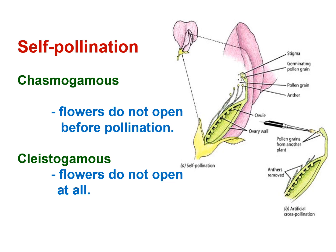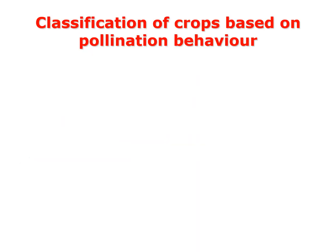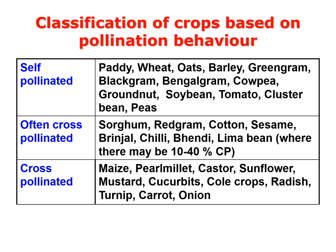Mechanisms promoting cross-pollination include unisexual flowers (monoecious or dioecious), self-sterility or self-incompatibility, dichogamy, herkogamy, and heterostyly. Classification of crops based on pollination behavior: self-pollinated crops include paddy, wheat, oats, barley, green gram, black gram, Bengal gram, cowpea, groundnut, soybean, tomato, cluster bean, and peas. Often cross-pollinated crops include sorghum, red gram, cotton, sesame, brinjal, chilli, okra, and lima bean, with 10–40% cross-pollination. Predominantly cross-pollinated crops include maize, pearl millet, castor, sunflower, mustard, sugar beets, cool crops, radish, turnip, carrot, and onion.